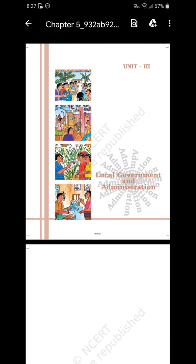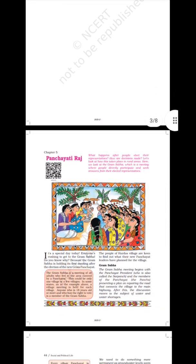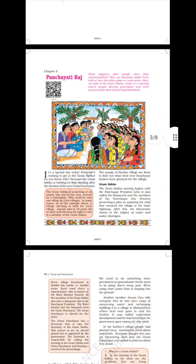What happens after people elect their representatives? How are decisions made? Let's look at how this takes place in rural areas. Here we look at the Gram Sabha, which is a meeting where people directly participate and seek answers from their elected representatives. It's a special day today. Everyone's rushing to get to the Gram Sabha. Because the Gram Sabha is holding its first meeting after the election of the new Gram Panchayat. Take a look at this image.